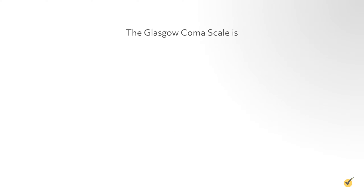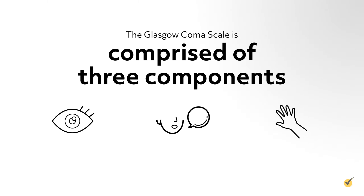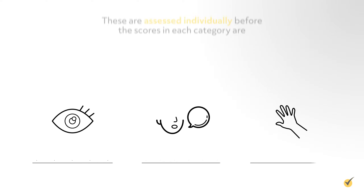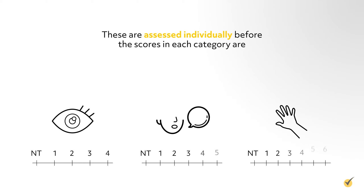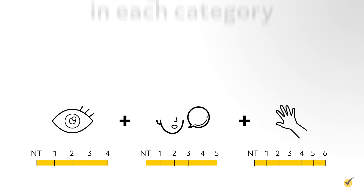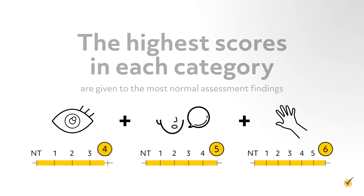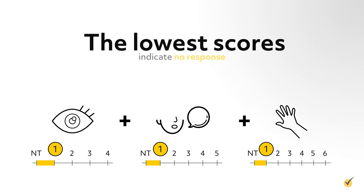The Glasgow Coma Scale is comprised of three components: eye opening, verbal response, and best motor response. These are assessed individually before the scores in each category are added together. The highest scores in each category are given to the most normal assessment findings, and the lowest scores indicate no response.